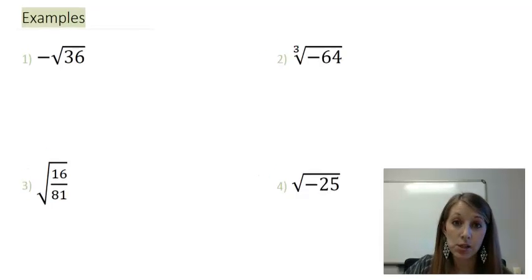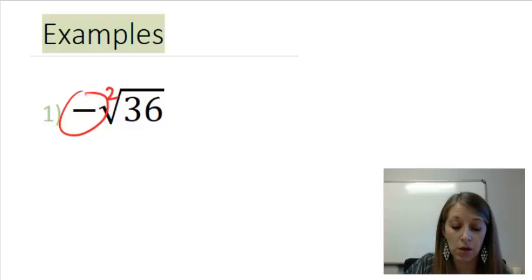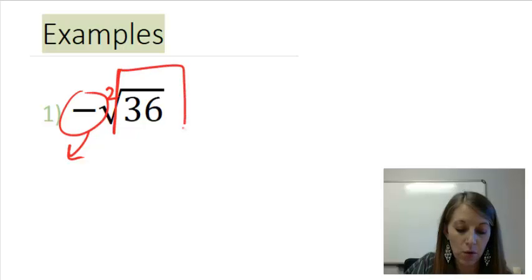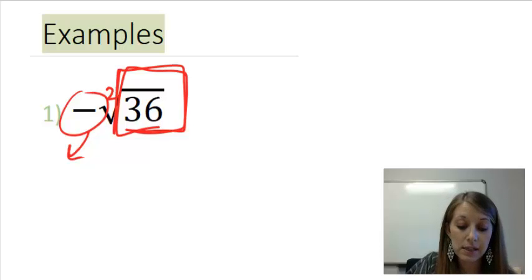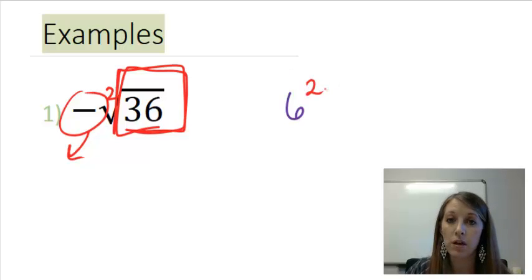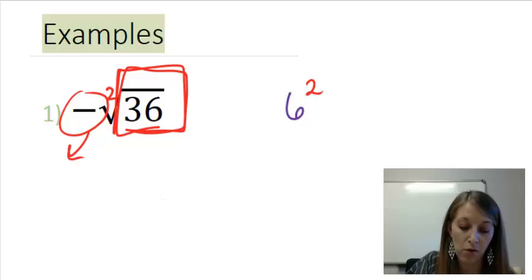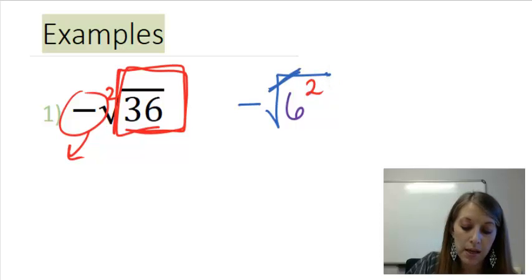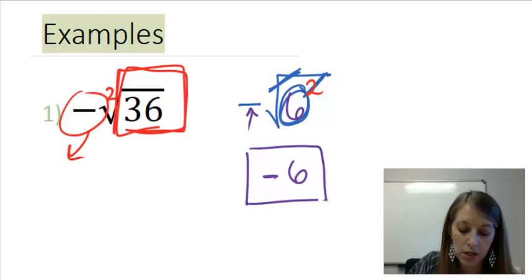Starting with example 1 — this is a square root since there's no number in the crevice. The negative is on the outside, so I'm temporarily going to ignore it and focus on the square root of 36. I need something times itself 2 times to give me 36 — that's 6 squared, since 6 times 6 is 36. I rewrite 36 as 6 squared; the square root and the square cancel out, leaving 6. Then I copy down the outside negative, so my final answer is negative 6.